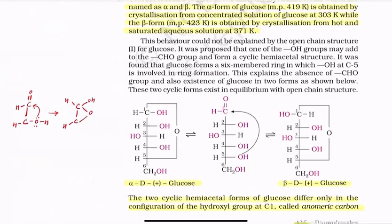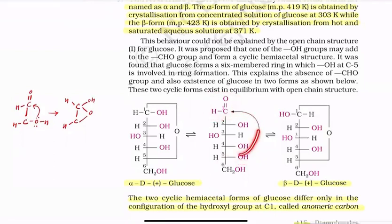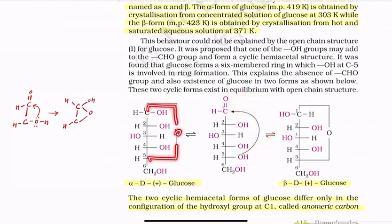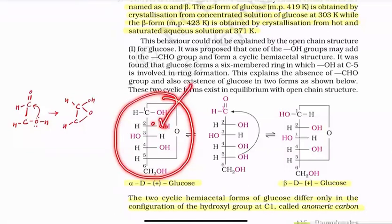Therefore, we proposed the cyclic structure. The cyclic structure is formed by the aldehyde group and the hydroxyl group on the fifth carbon reacting to form a hemiacetal structure. The OH group attacks the aldehyde carbon, and oxygen becomes part of the ring, forming a C-O-H hemiacetal. This gives the cyclic form of glucose.